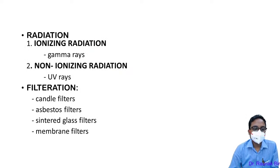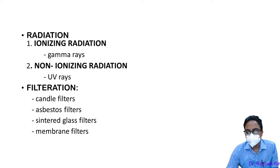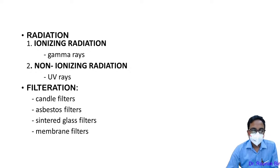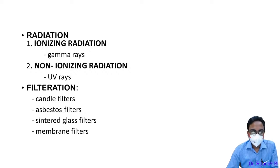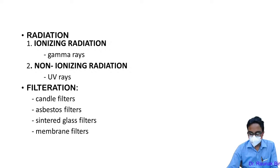The second physical method is radiation. Radiation is of two types: ionizing radiation, for example gamma radiation, and non-ionizing radiation. For filtration, we use different types of filters — mostly gravity filters or membrane filters like candle filters and asbestos filters.